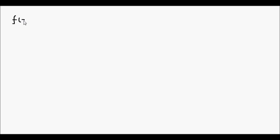Hello and welcome. Suppose we have a function f that's composed of u, one function of x, divided by another function of x, v. So the function f is a quotient of the functions u and v.